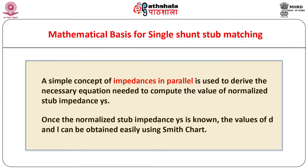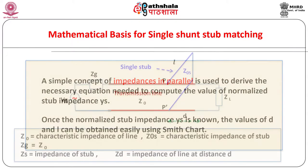What is the mathematical basis for designing of a particular type of stub? The answer is simple. A simple concept of impedances in parallel is used to derive the necessary equations needed to compute the value of normalized stub impedance y-sub-s. Once the normalized stub impedance y-sub-s is known, the values of D and L can be obtained easily using Smith chart. Consider the circuit with a lossless transmission line of characteristic impedance Z0 terminated in a load with impedance ZL.